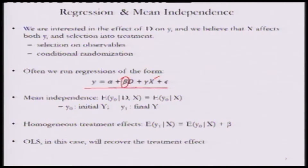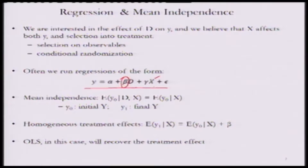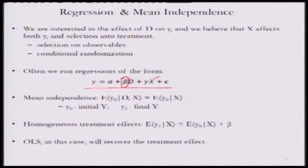As the first point says, we are interested in the effect of d on y and we believe that x affects both y and the selection into treatment. So x essentially represents two types of issues: one is selection on observables — if we observe x and that is how d is selected, then controlling for x takes care of the problem. The other is conditional randomization, particularly in the case of experiments, where we run an experiment conditioning on variables such as x.